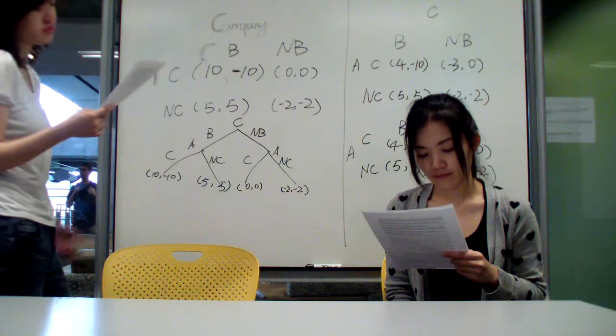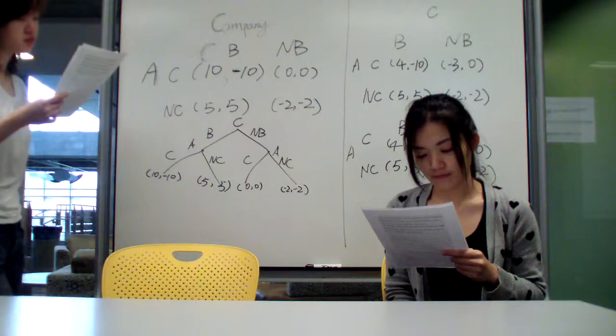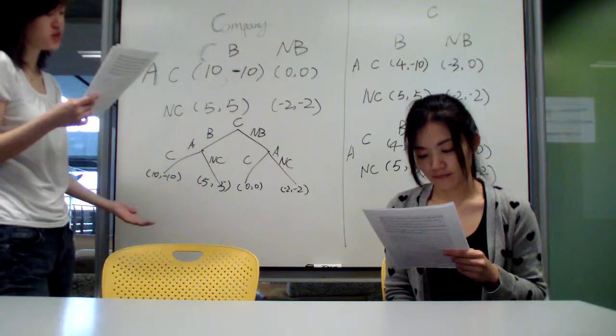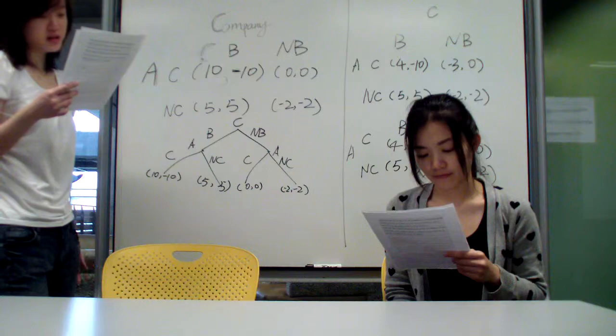We can see from the normal form game, cheating is the dominant strategy for the applicant given any strategy applied by the HR. Although this is not Pareto optimal.